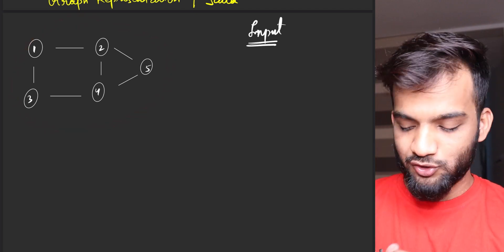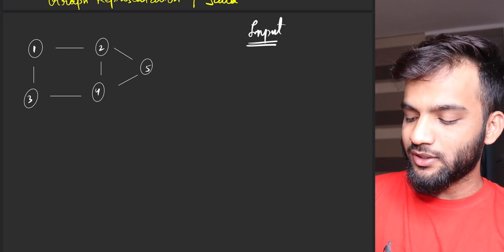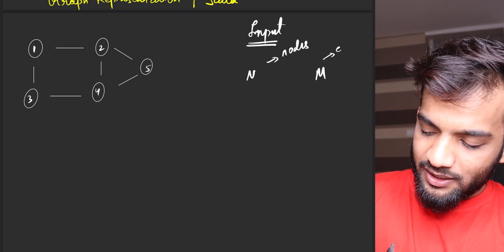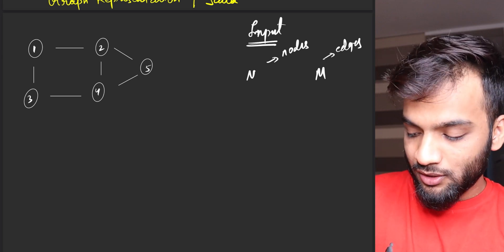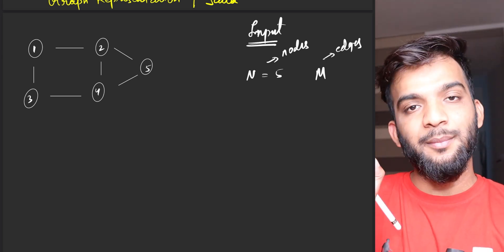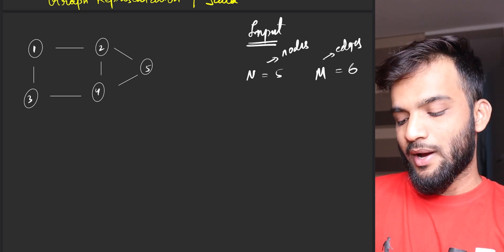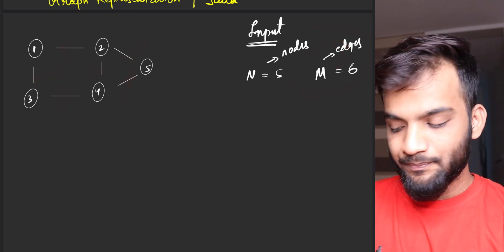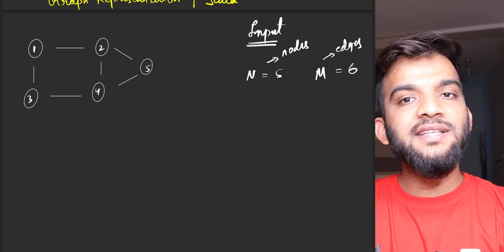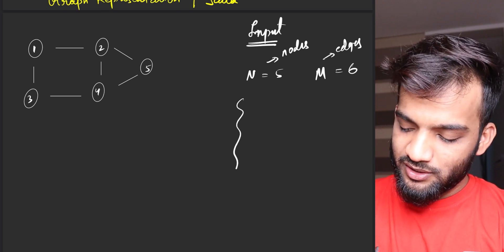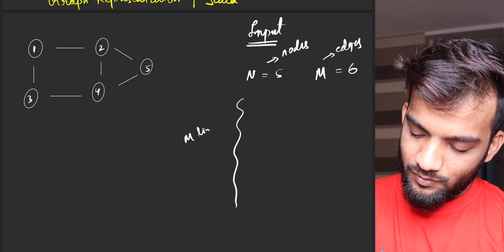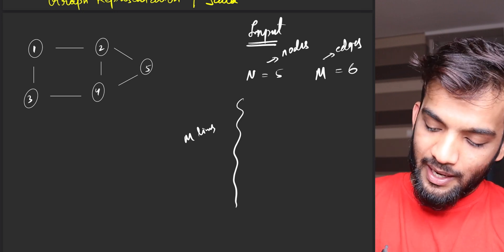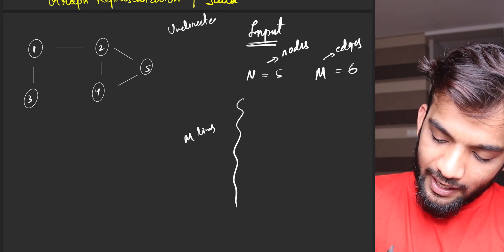If you see this graph data structure, the first thing they will tell you is n and m, where n is the number of nodes and m is the number of edges. For this graph, the number of nodes is five and the number of edges is six. The next thing they will tell you is: given m lines, and those m lines will represent all the edges.